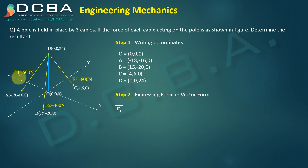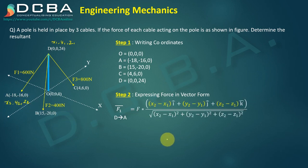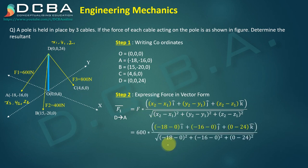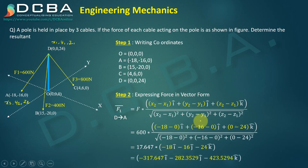This F1 is going from point D to point A, correct. So we can say that point D has x1, y1, z1 and point A is x2, y2, z2. So the same thing you have to substitute here and F will be 600 newtons. These are the coordinates x2, y2, z2 you can get it from your point A, and for D it is 0, 0, 24. So when you solve it, it will be -317.647 i cap - 282.352 j cap - 423.529 k cap.